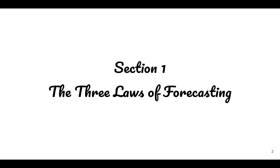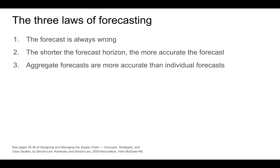Let's first discuss the three laws of forecasting. The first law is that the forecast is always wrong. The second law states that the shorter the forecast horizon, the more accurate the forecast. Finally, the third law states that aggregate forecasts are more accurate than individual forecasts.